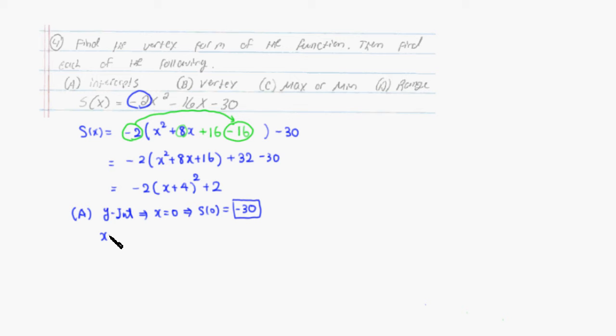To find x intercept, remember that we have to set the y equal to 0. So y is the function, so we're going to set the function equal to 0. So let's do that. The function is, I'm going to use this guy here. Negative 2 x plus 4 squared, plus 2. So this is the function written in vertex form. So we have to set this guy equal to 0.